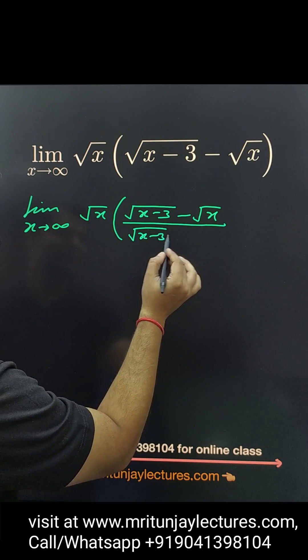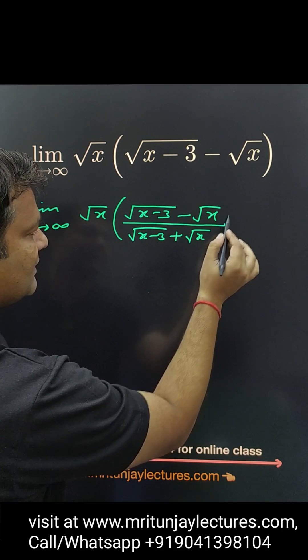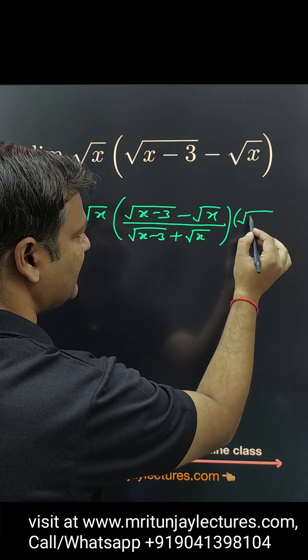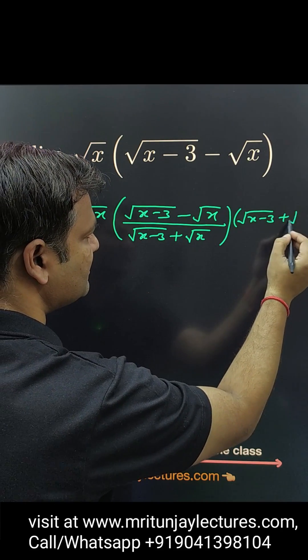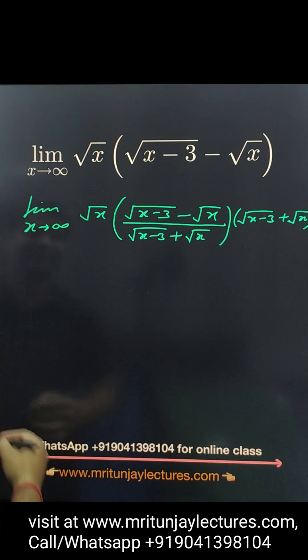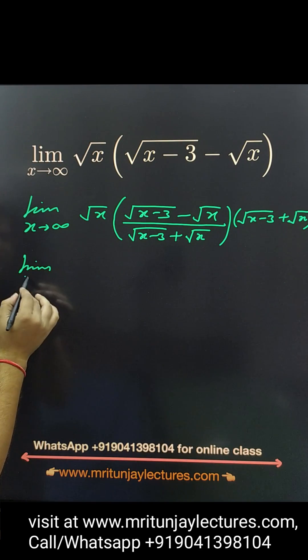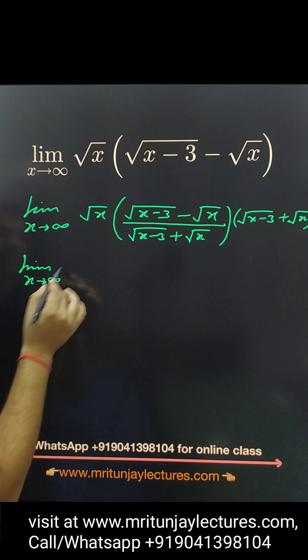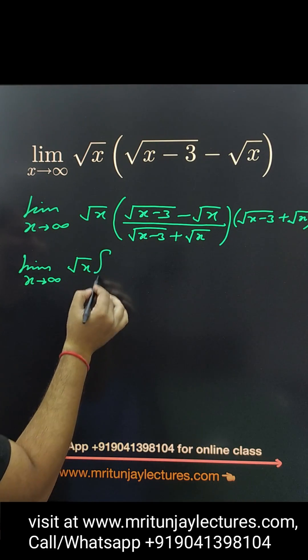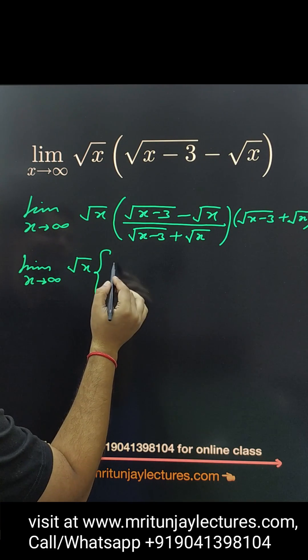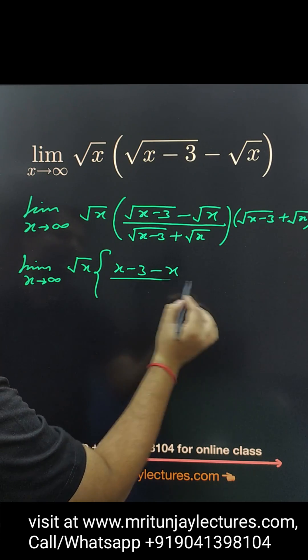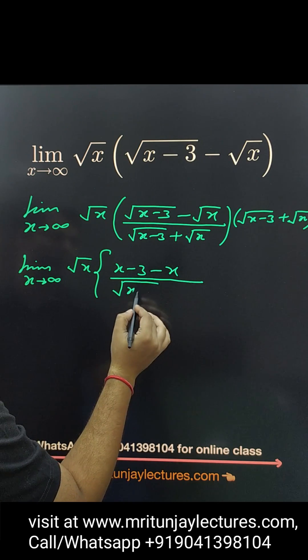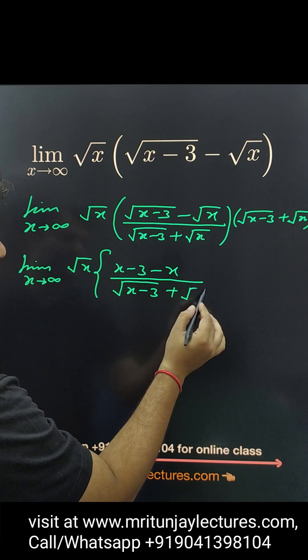So root x minus 3 plus root x. Then that value is how much? X tends to infinity. So here root x minus 3 plus root x. So here x minus 3 and minus x divided by root x minus 3 plus root x.